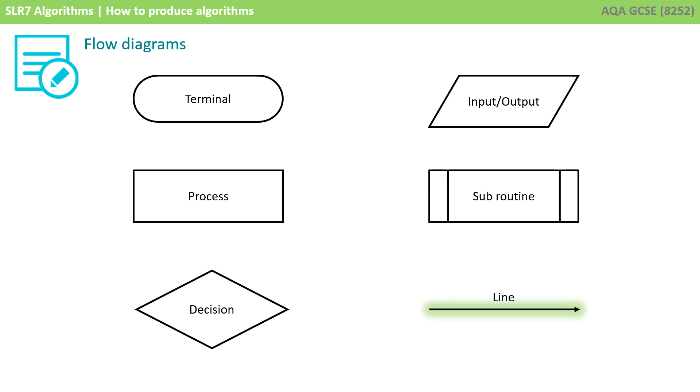Finally, you have a line, and the purpose of the line with an arrow represents the control passing between connected shapes. It's the flow of the algorithm.